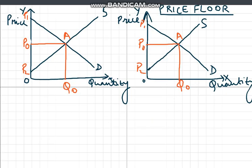We will begin with price floor. In our first example, as we can see on the left-hand side panel in the diagram, we have our x-axis that represents quantities and our y-axis that represents prices. This is our supply curve and this is our demand curve. Point A, that is the intersection of supply and demand curve, represents the equilibrium condition. Q0 and P0 are the equilibrium quantities and prices. This equilibrium A is basically the equilibrium when there is no externality.